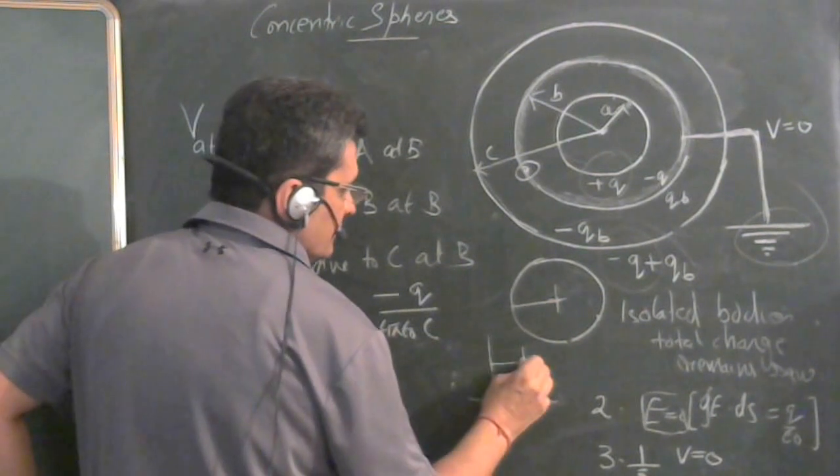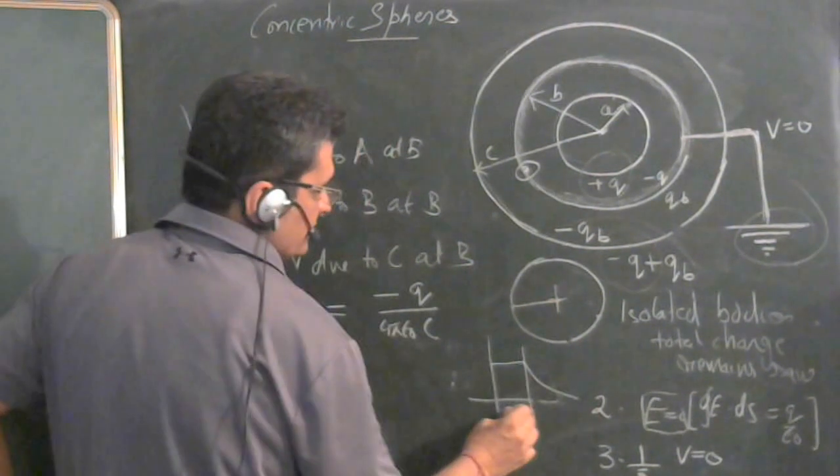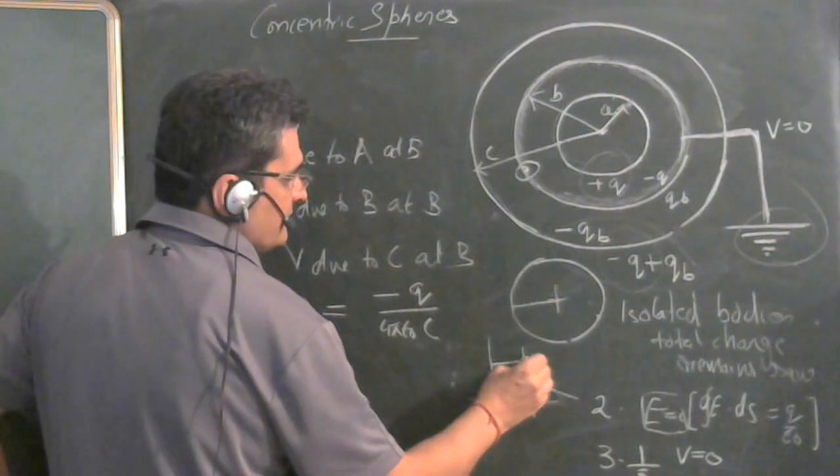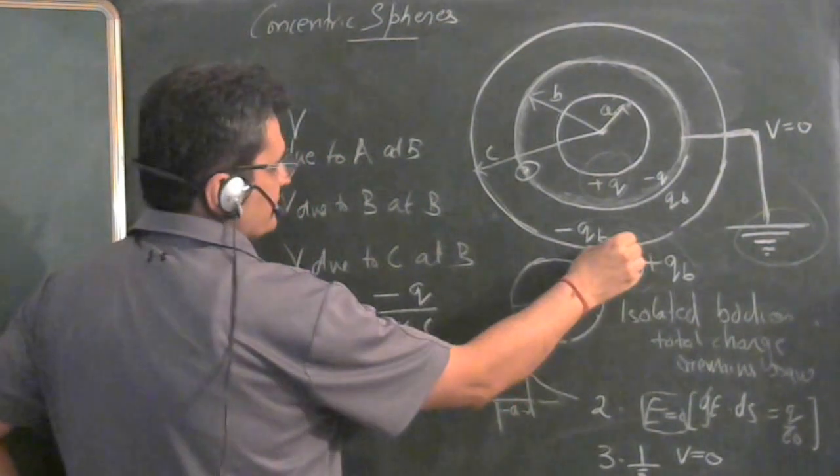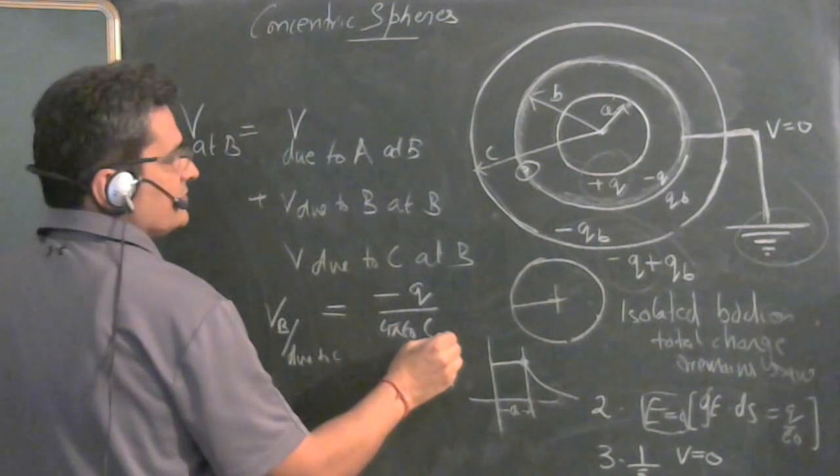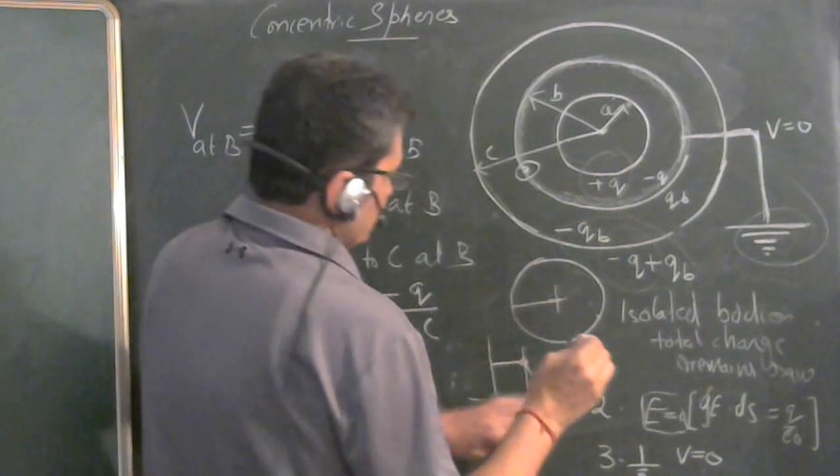If this is the radius A, potential inside will be same as potential on this surface. Potential on this surface is minus Q upon 4 pi epsilon zero C. Same potential will appear here.